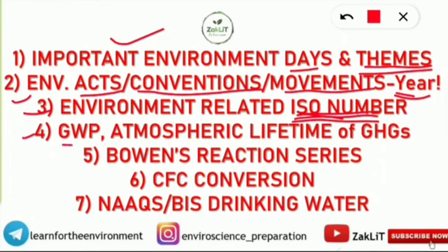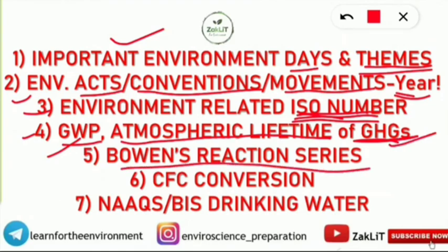The fourth topic is global warming potential and atmospheric lifetime of greenhouse gases. This can be asked in increasing or decreasing order — you have to arrange them. In some twisted form, questions on global warming potential and atmospheric lifetime of greenhouse gases are a must.